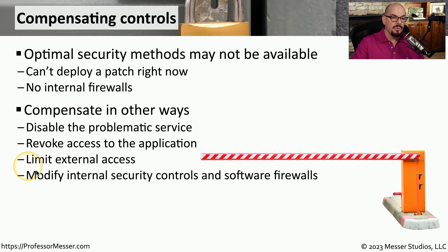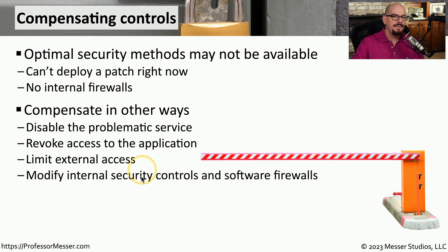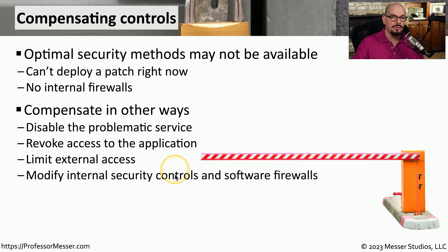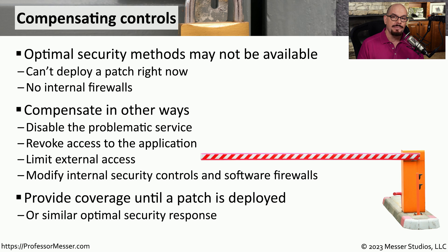Most organizations will have a firewall on the edge, and they may be able to set policies on that firewall that would prevent anyone from the outside from gaining access to that application or service on the inside. And there might be ways, even without internal firewalls, to provide additional types of security controls — for example, you may be able to set access control lists in a router, or there may be software-based firewalls that you can install on the application server itself. Obviously, patching the application itself would be the best possible resolution, but if you're not able to do that, some of these compensating controls might be a good second choice.